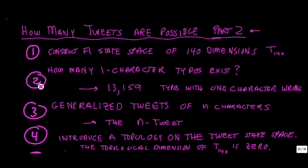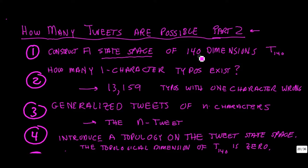I'm going to enumerate some of these right now in this intro. We're going to show that you can construct a state space of tweets. One way to look at it is as a big spreadsheet — but instead of a two-dimensional Excel spreadsheet with rows and columns, we're going to construct a 140-dimensional spreadsheet where each cell contains a character string that is a valid tweet. I'll call this the state space of tweets, ST140.